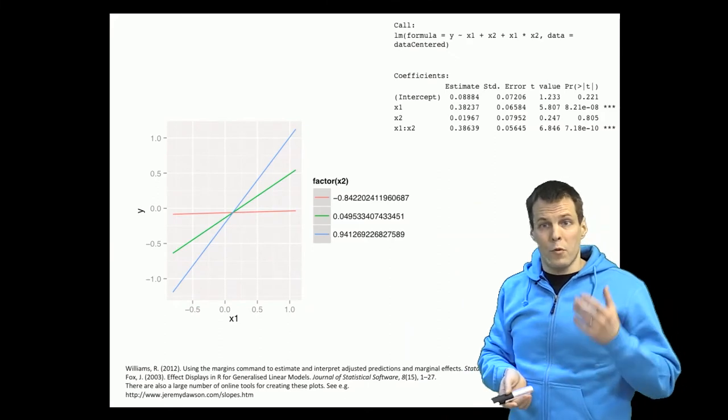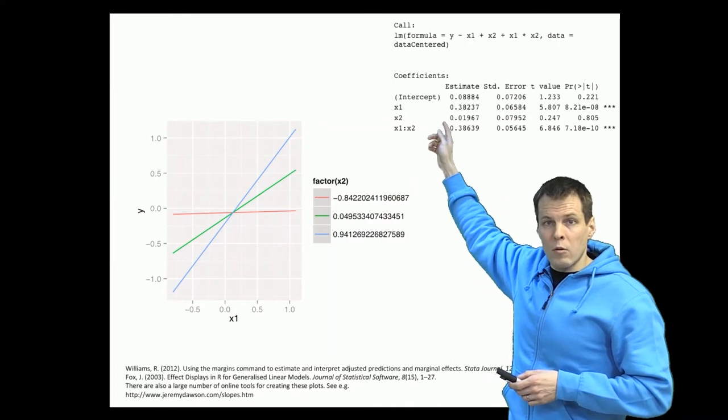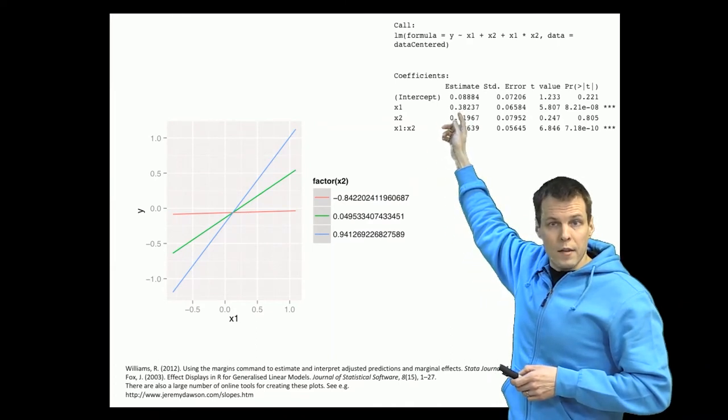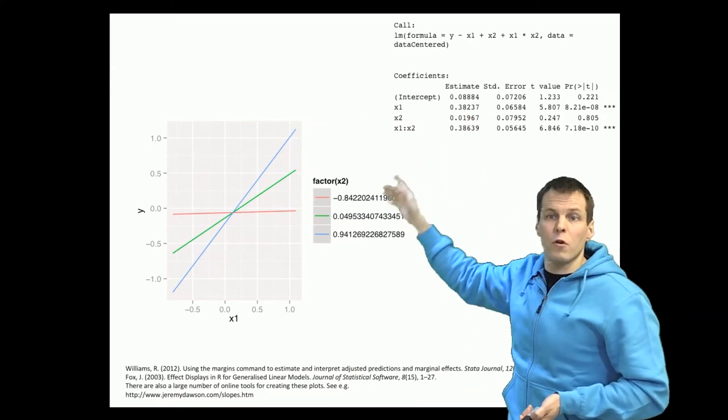So you have to present this kind of plot anyway. So what we show here whether we have the effect of X1 here to be the blue, green or red line doesn't really make a difference. We have to show all the lines anyway.